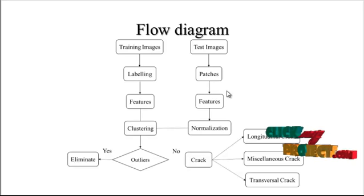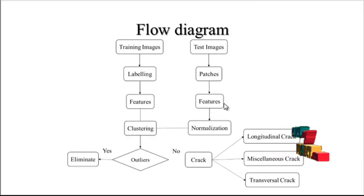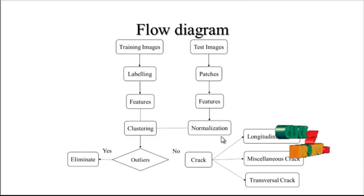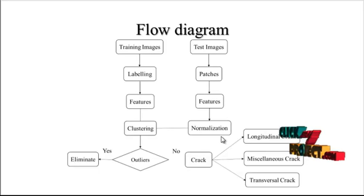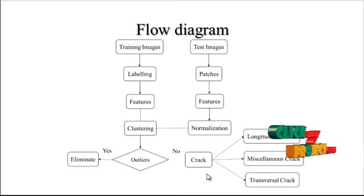After extracting the cracks, the process moves to localization and feature extraction. In the localization part, the exact position where the crack is detected is localized. Then features are extracted from those particular regions and normalization is performed. Finally, classification is done to classify which type of crack is present.